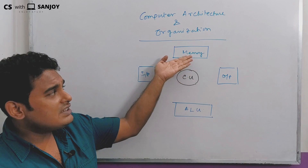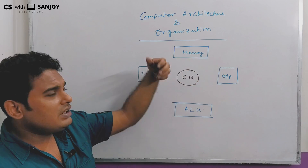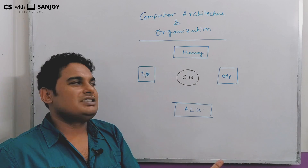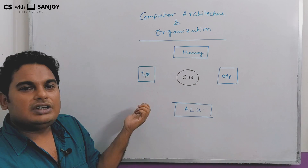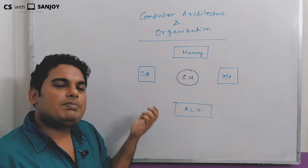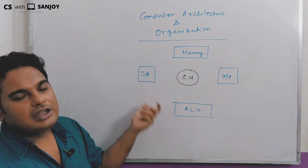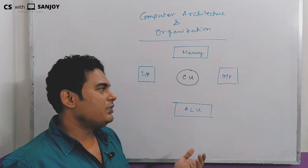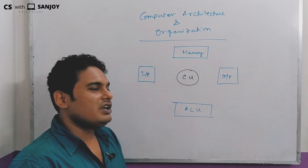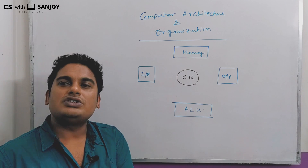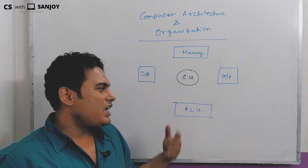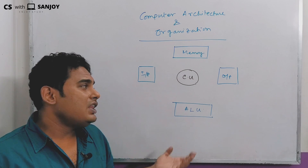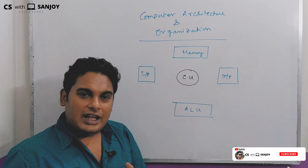The component called memory is a part of architecture, so we have memory components and memory organization. Input devices are a component and part of architecture, so we have input device organization. We have to use the control unit and control unit organization. We have to use the arithmetic and logic unit and ALU organization.